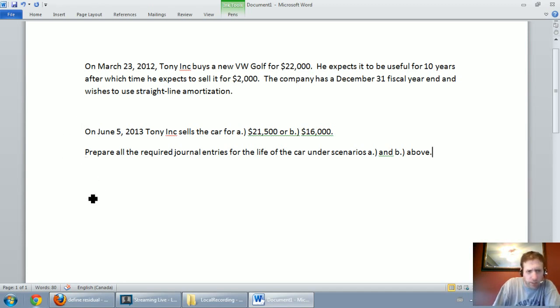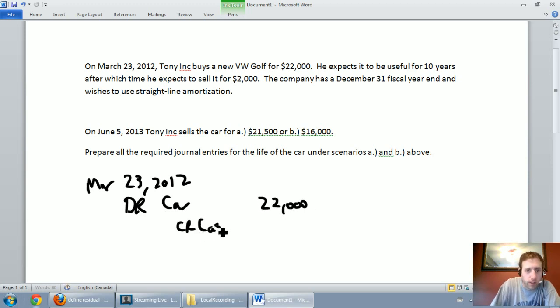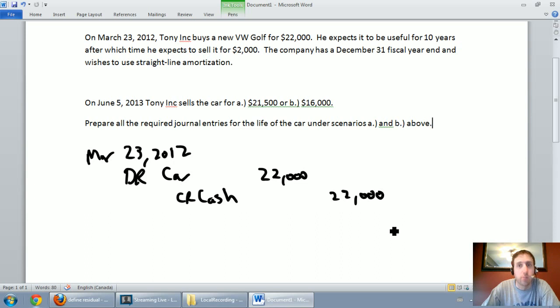So the first thing we've got to do is buy the car. The date is March 23rd, 2012 and we buy a car. Let's assume for cash. I'm going to debit car $22,000 and credit cash $22,000. So we got our car, marvelous.